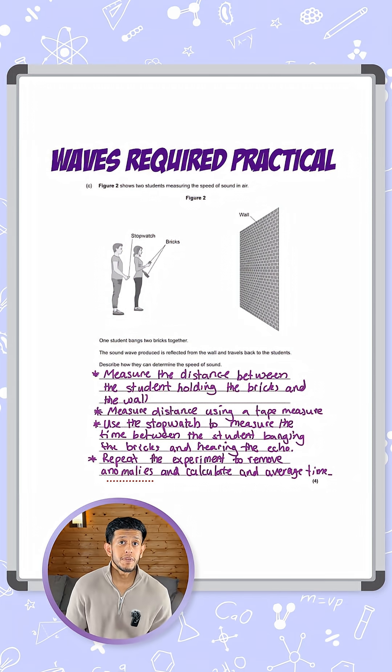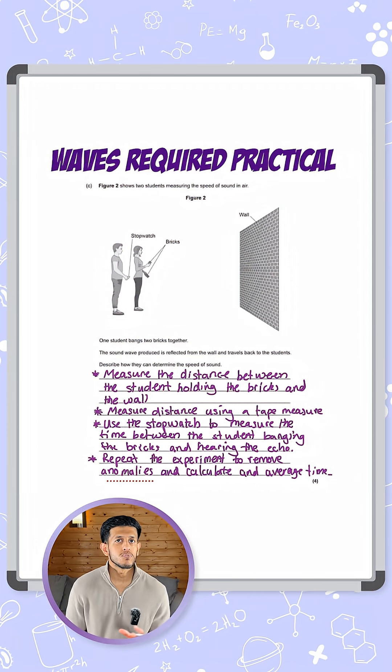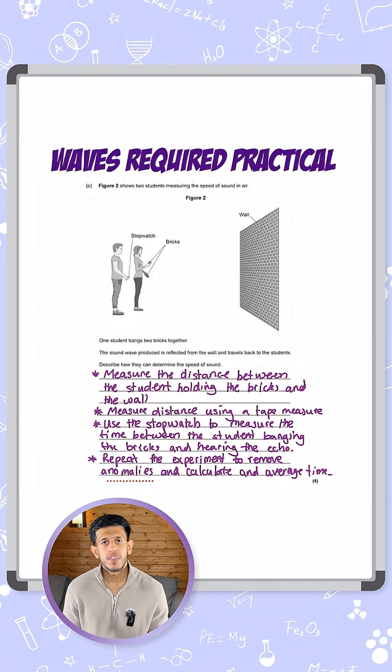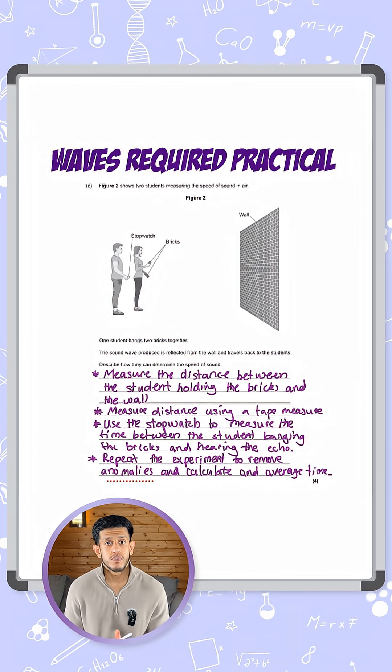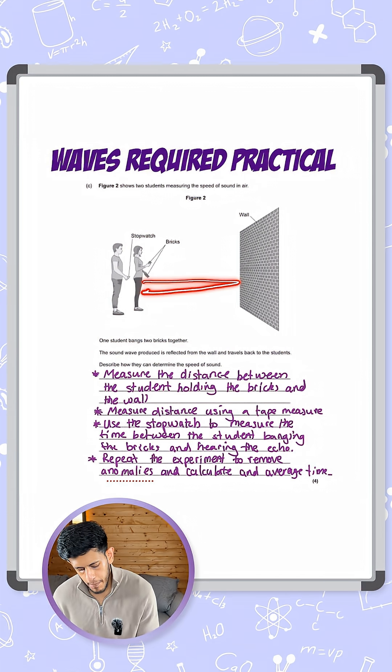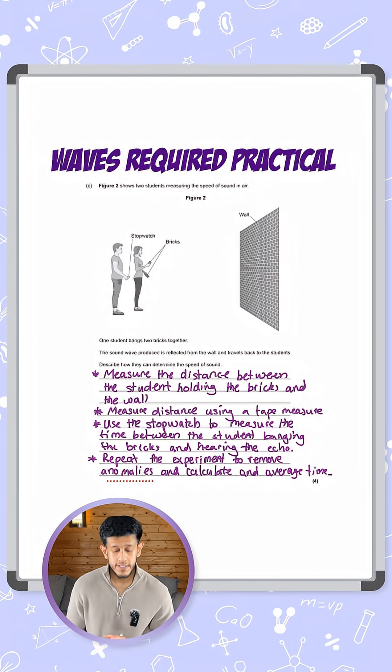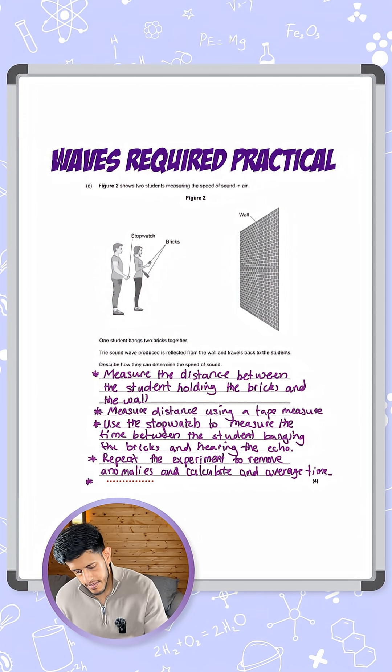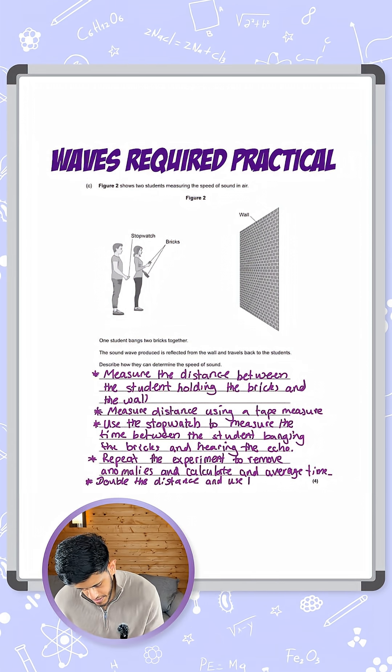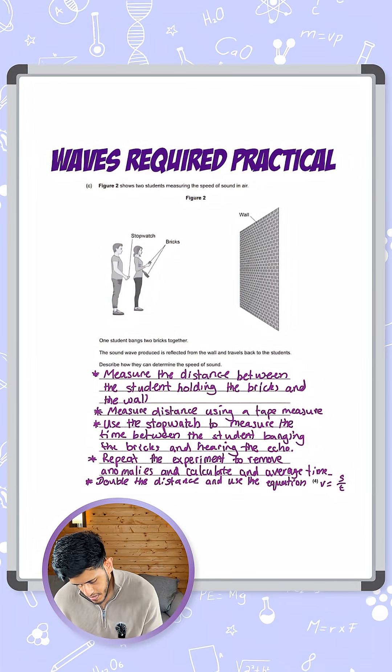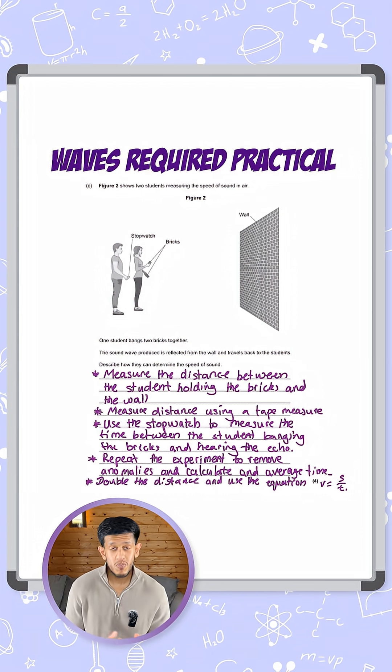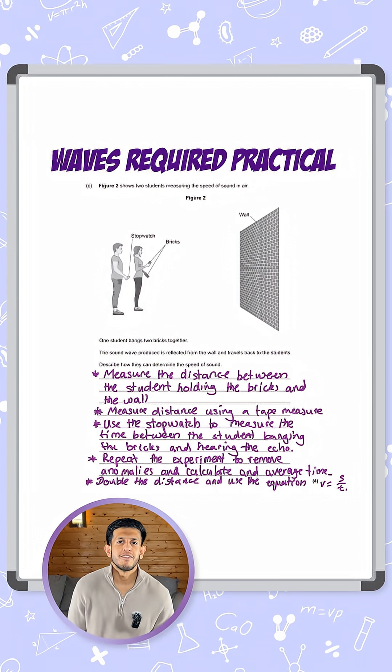Now we want to calculate speed. So we know that speed equals distance over time. However, one thing we need to be careful of here is because it's the echo that we're waiting for. The distance the sound would have traveled is the distance we measured to the wall but then also for it to come back. So we need to make sure we double the distance. So I'm going to say firstly double the distance and use the equation speed equals distance over time, or v equals s over t. And all of that together, we've mentioned five points, almost six, but it's more than enough to get your full marks.